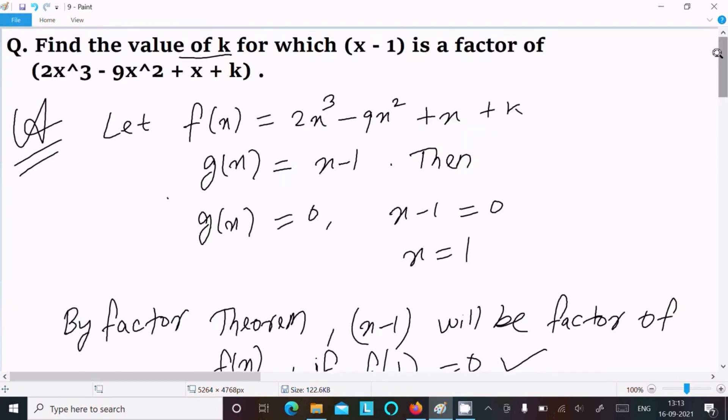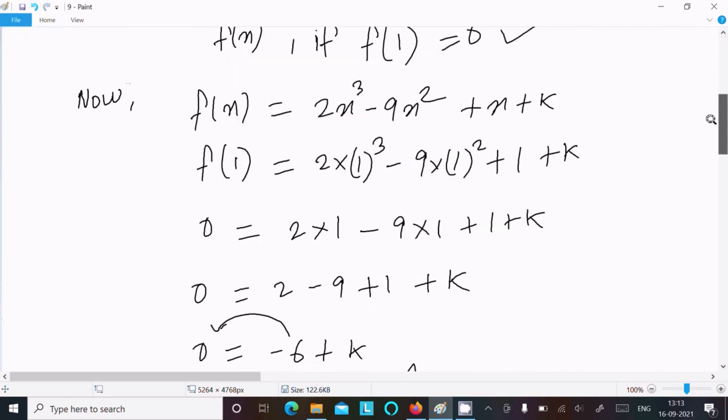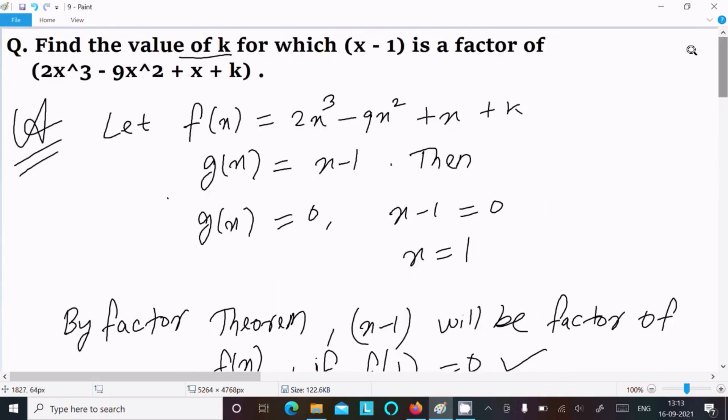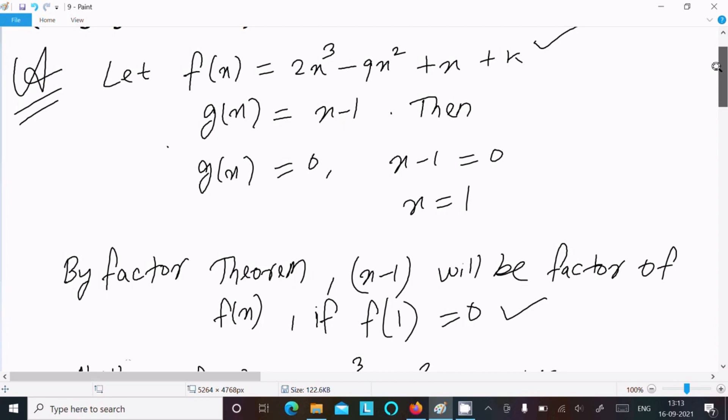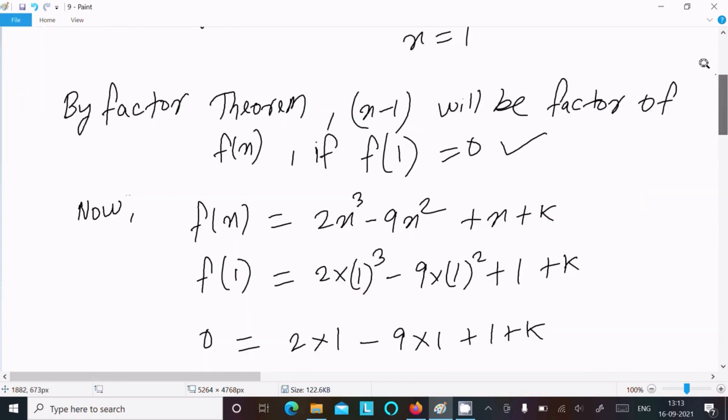So find the value of k and here k equal to 6. So one time going to repeat: write the given polynomial here, assume f(x), next is g(x). So x minus 1 is the factor, so x minus 1 equal to 0. Now x equal to 1. By factor theorem, x minus 1 will be factor of f(x) if f(1) equal to 0.